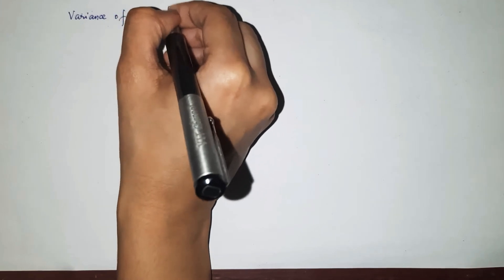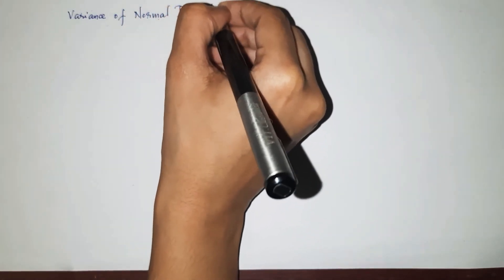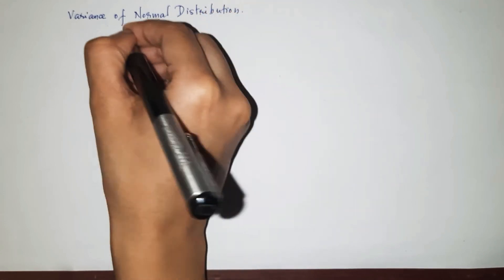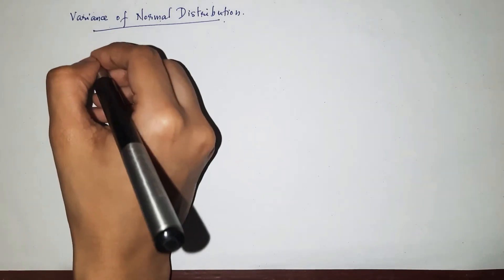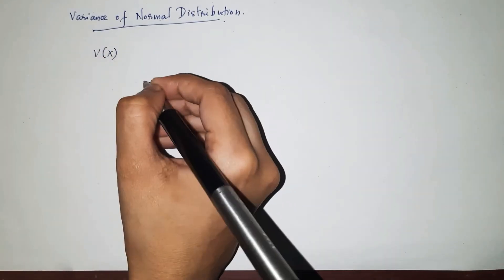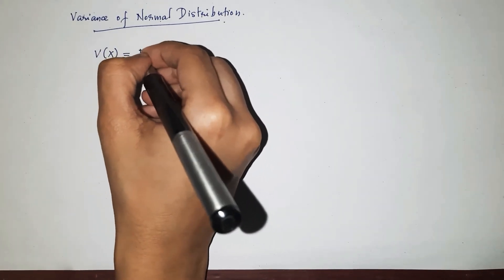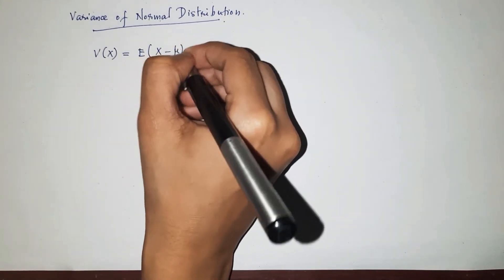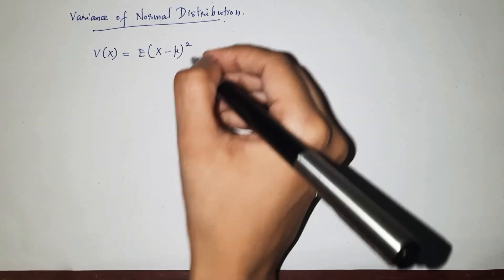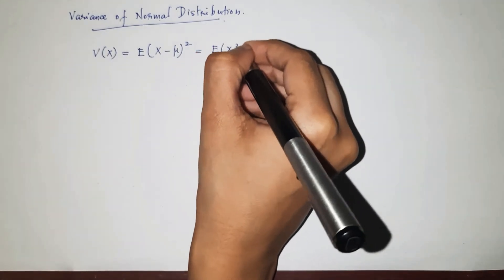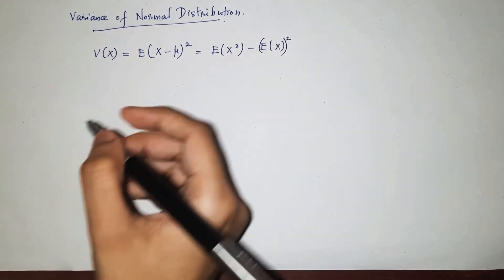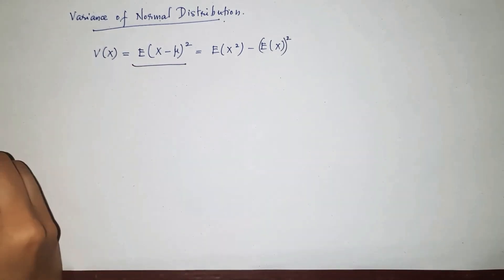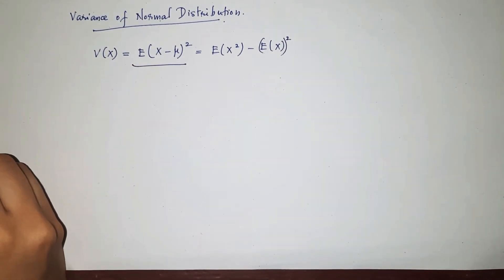The variance of the normal distribution is a bit lengthy procedure to find, but it is never a difficult one. The variance of x, denoted by V(x), is equal to the expectation of (x minus mu) squared, or alternatively, the expectation of x squared minus the expectation of x squared. We are going to use the first formula: expectation of (x minus mu) squared.